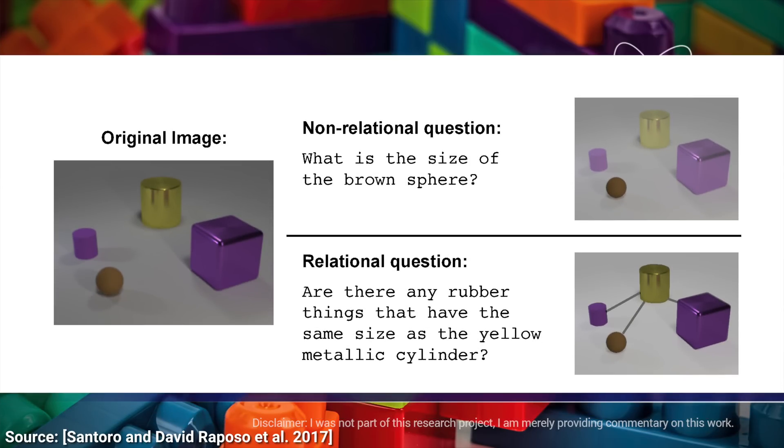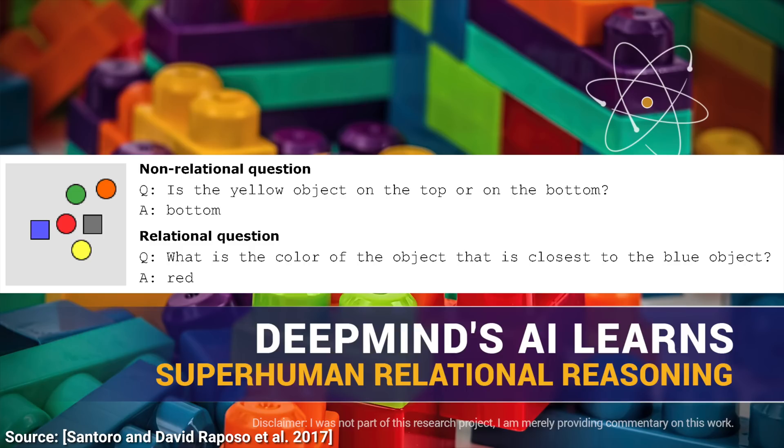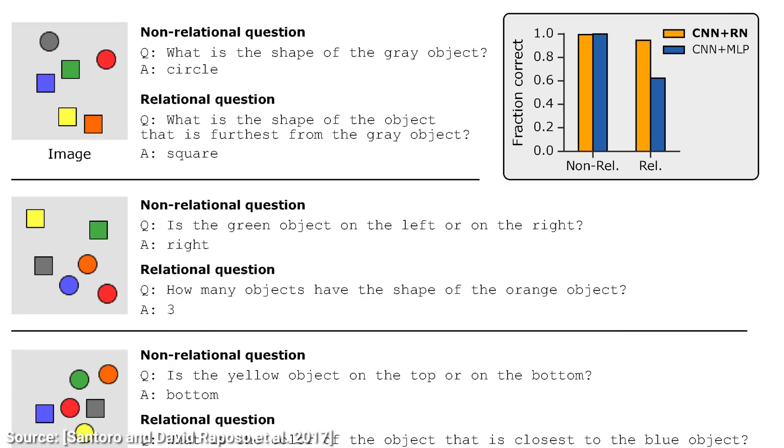This means that we can present the algorithm with an image and ask it relatively complex relational questions. For instance, if we show it this image and ask what is the color of the object that is closest to the blue object, it would answer red. This is a particularly difficult problem because all the algorithm has access to is a bunch of pixels.